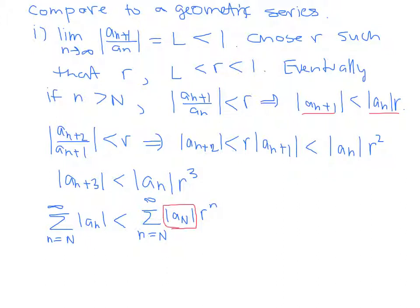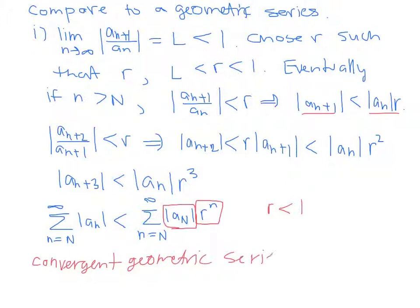That tail sum is just some number times a convergent geometric series, since R is less than 1. The fact that we left off the first however many terms doesn't change the fact that this will be convergent — it will still add to a finite number. So using this logic, we know that the sum of the a_sub_n's converges, and in fact converges absolutely, which implies convergence.